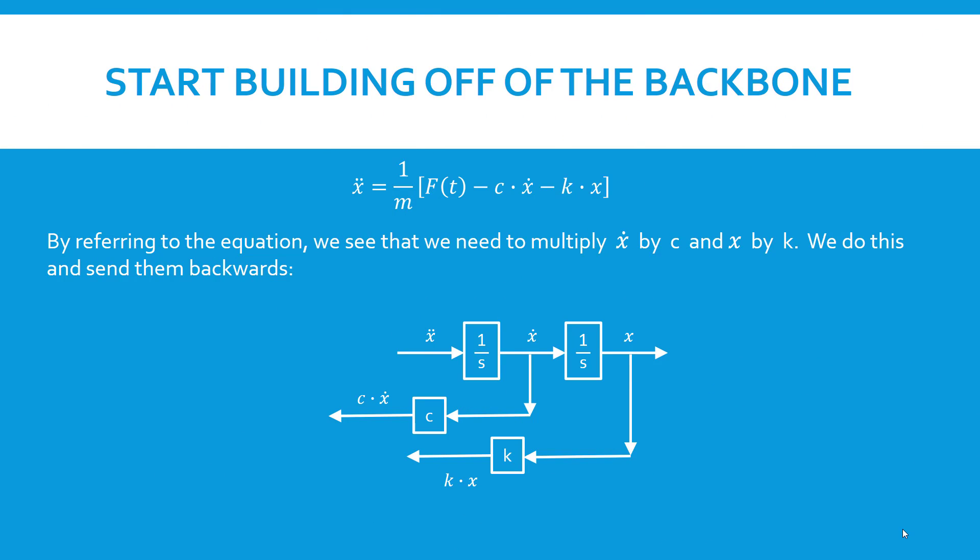We keep the equation handy and start by building off of the integration backbone. We can see that we need to multiply x dot by c, which is the damping coefficient, and we need to multiply x by k, which is the stiffness coefficient. So we come off of the integration backbone and perform those multiplications, resulting in c times x dot and k times x. We're starting to build the equation in block diagram form. We have the second and third elements that are inside the brackets.